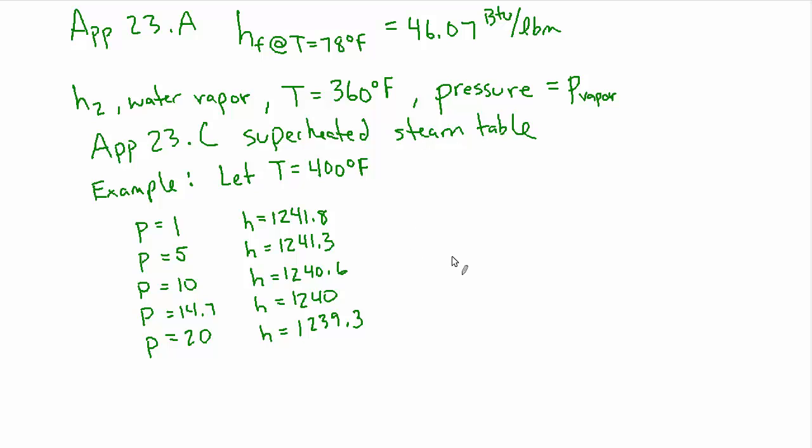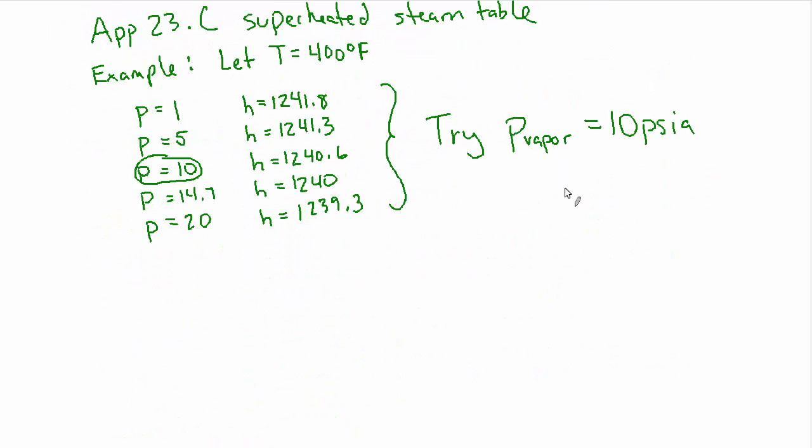We can just literally pick any one of these and we'll be fine. So why don't we try 10? So from all this, we'll say, let's try P vapor. The partial pressure of the water vapor in the air is 10 psi. This was just my example. The temperature is not actually 400. It's 360. So we do have to interpolate. I just wanted to prove that point so that we didn't have to interpolate five times for me to make this point.